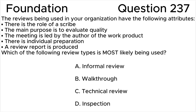ISTQB Foundation Level, question 237. The reviews being used in your organization have the following attributes: there is the role of a scribe; the main purpose is to evaluate quality; the meeting is led by the author of the work product; there is individual preparation; a review report is produced. Which of the following review types is most likely being used? A) Informal review, B) Walkthrough, C) Technical review, D) Inspection.